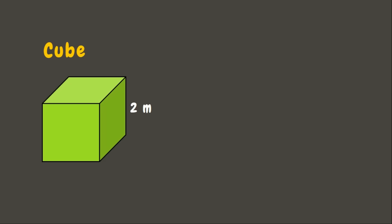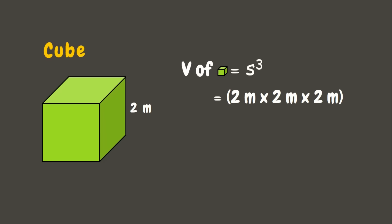This time we have a cube whose sides measure 2 meters. To solve for its volume, since a cube has equal sides, the formula is side × side × side, or s³. So that will be 2 meters × 2 meters × 2 meters = 8 cubic meters. And that's the volume of this cube.